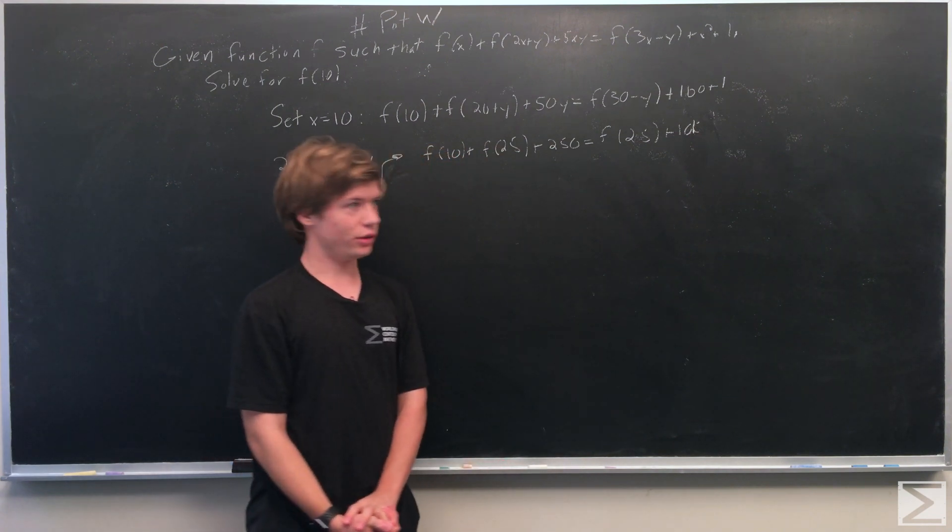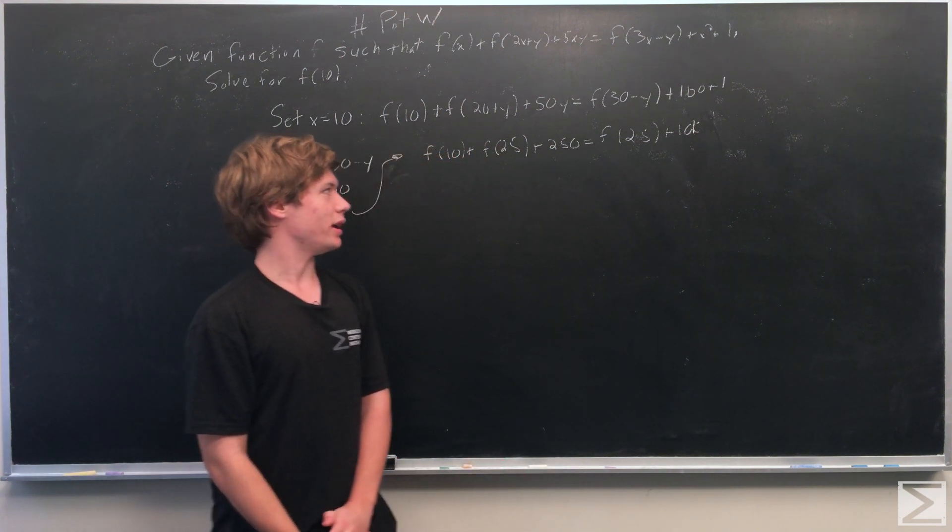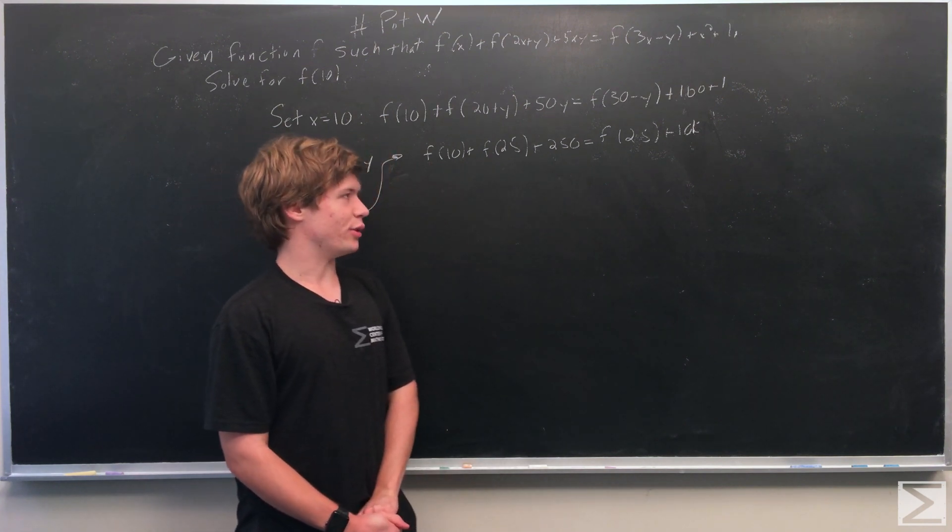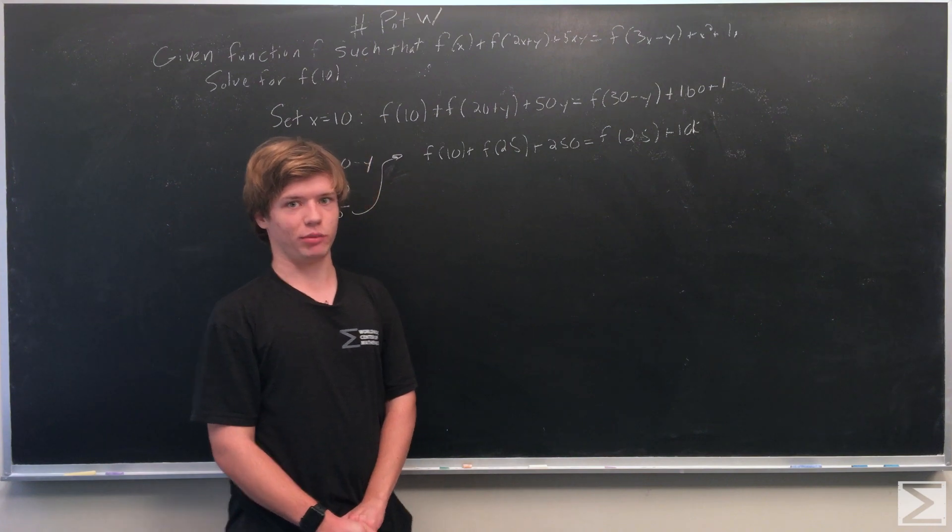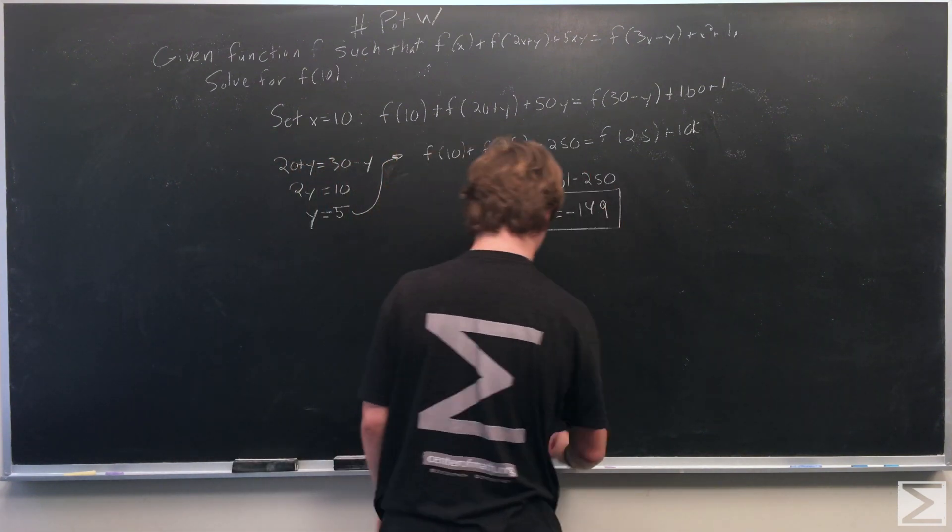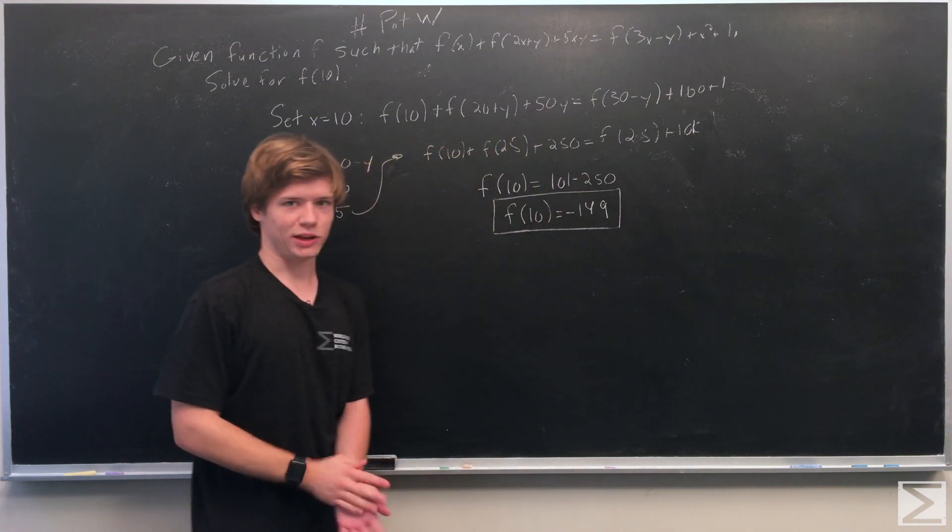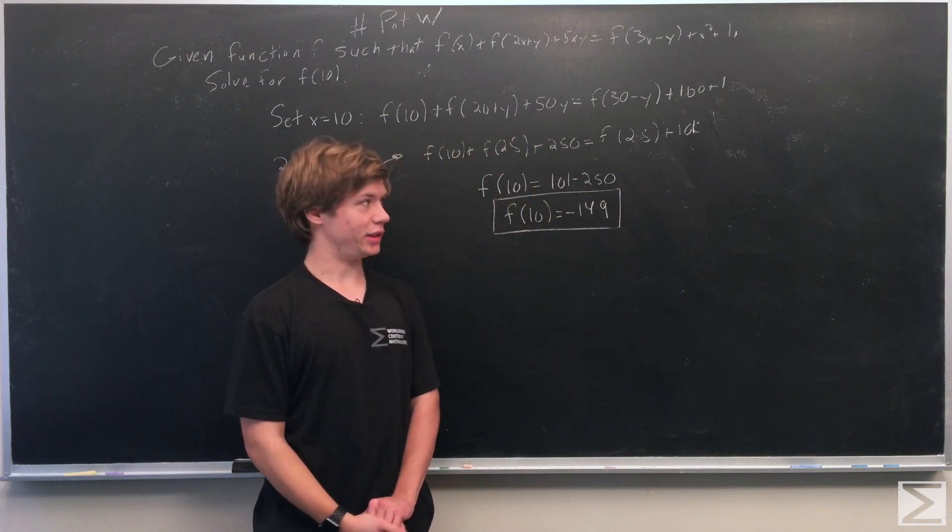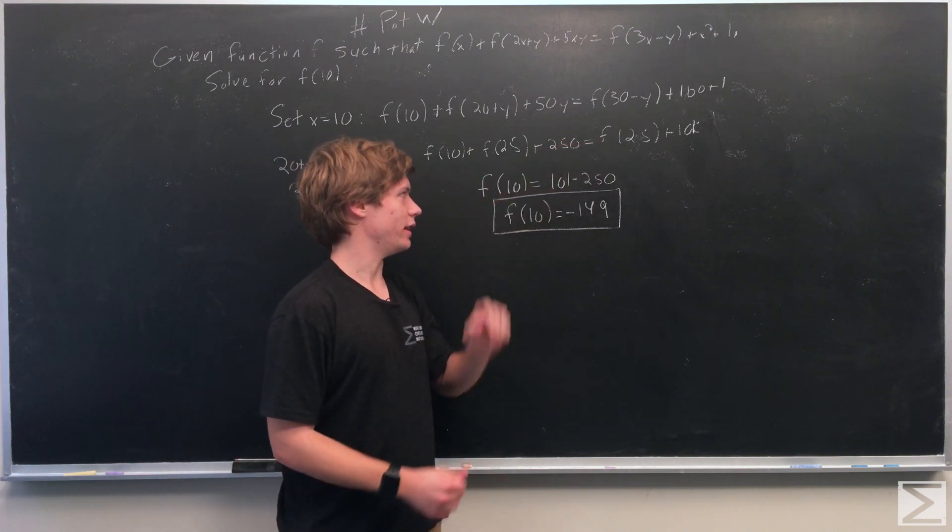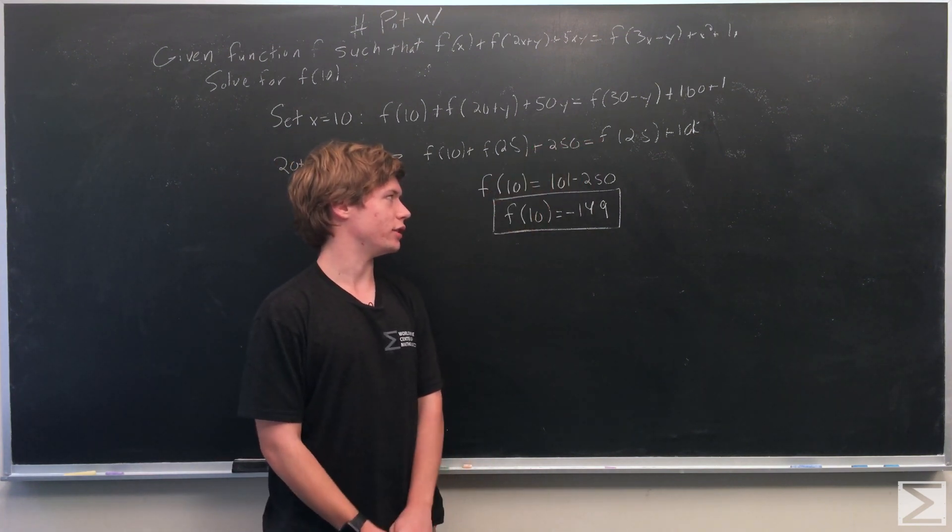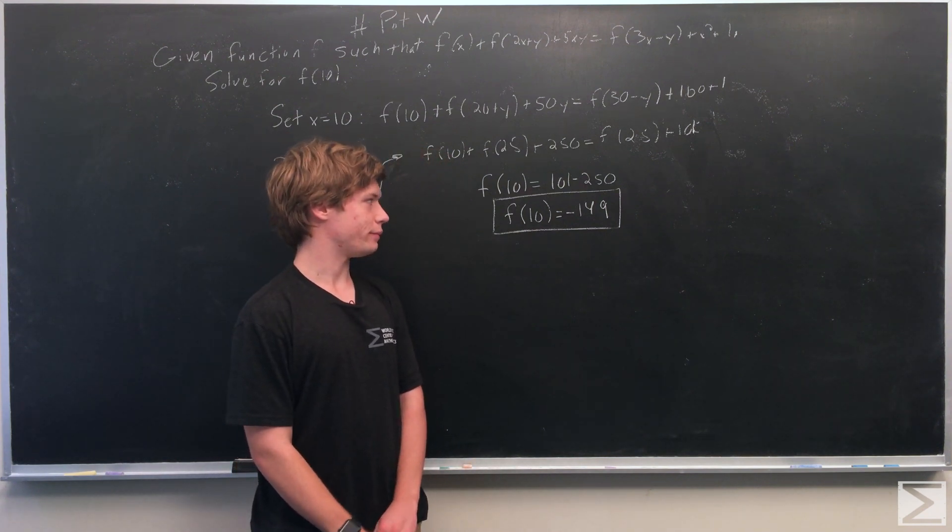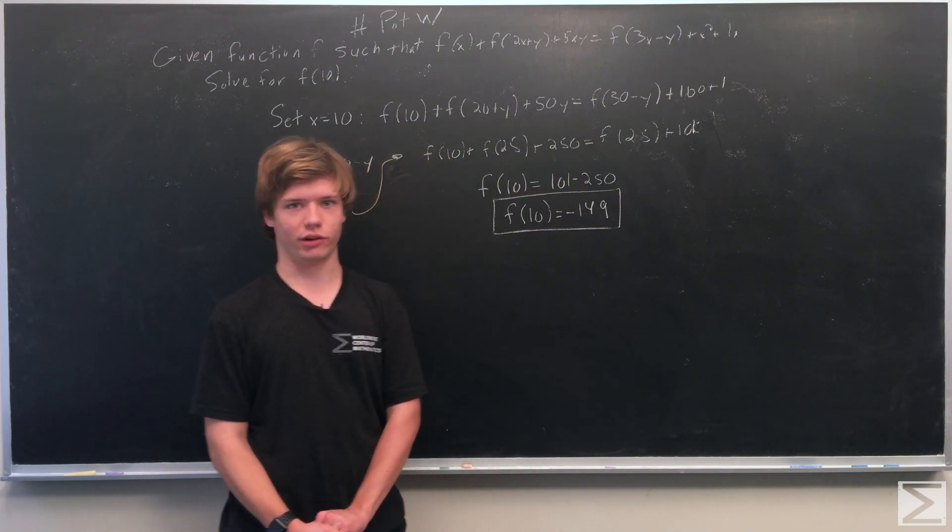So now all we have to do is cancel the f(25) from each side and subtract 250 from both sides. We have 101 minus 250, and we find that the final answer is f(10) = -149.